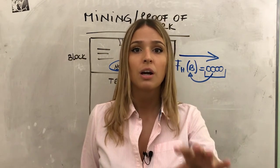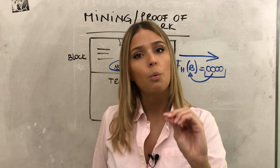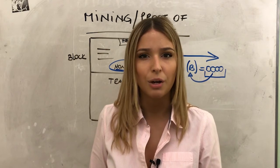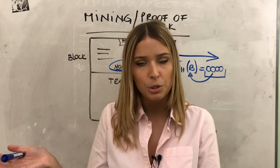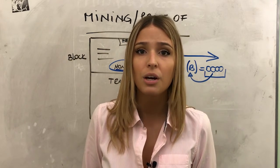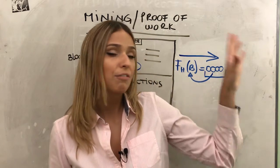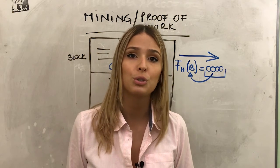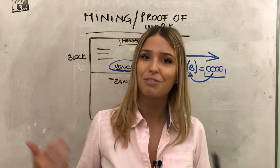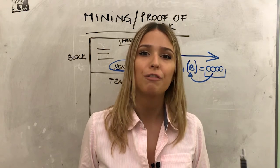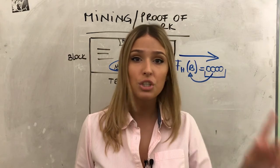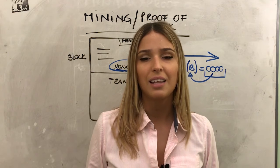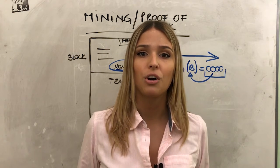When a miner wins the competition and closes a block, that information is propagated to the system, the transactions are confirmed, and everyone in the network knows what happened. That is the first approach to understanding the mining and proof of work process. There is more to learn in following videos, but this is a solid foundation. This is part of the video series 'Bitcoin Under the Hood.'